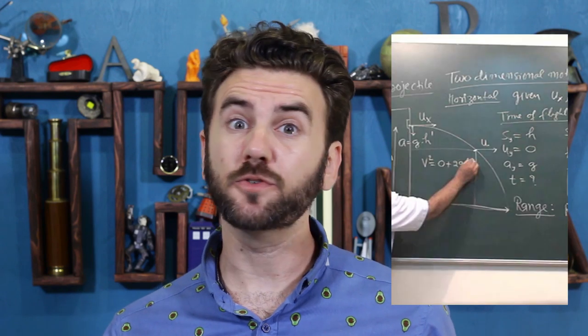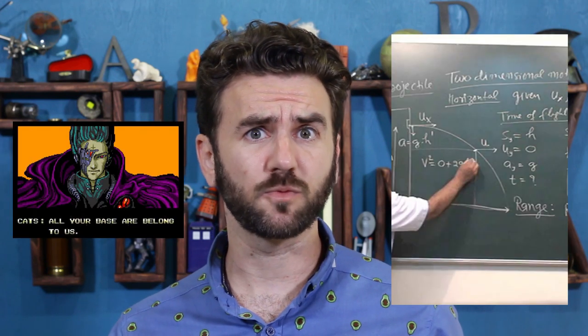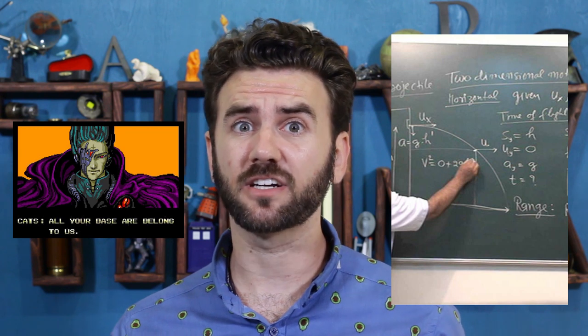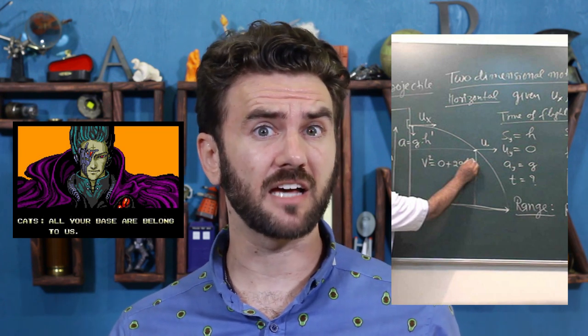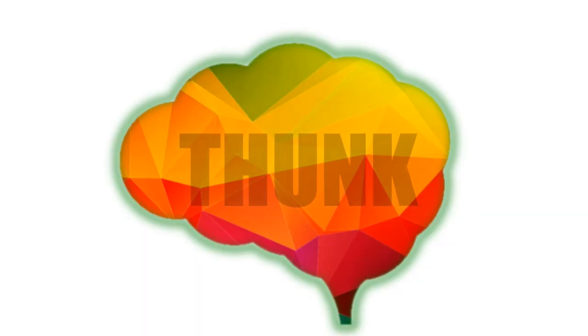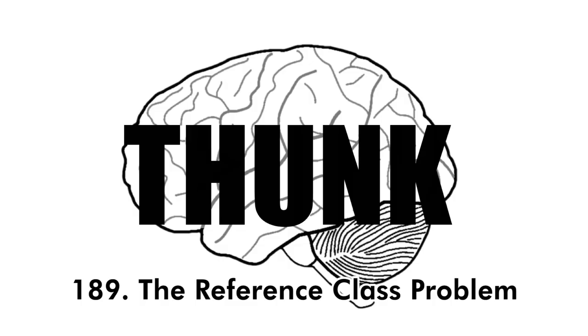I had a physics teacher in high school who used to make jokes about 'all your base belong to us' while he was teaching. It took me a little while to realize that it wasn't your typical reference class. John Smith is a 50-year-old man. 8 out of 10 50-year-old men live to the age of 61. What are the odds that John Smith will live to the age of 61?